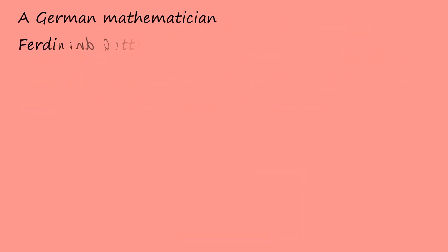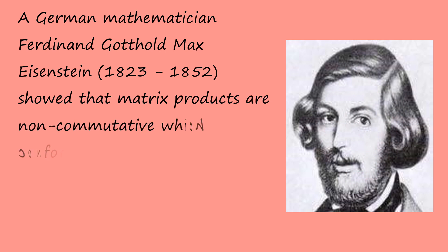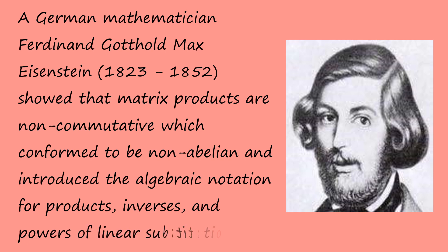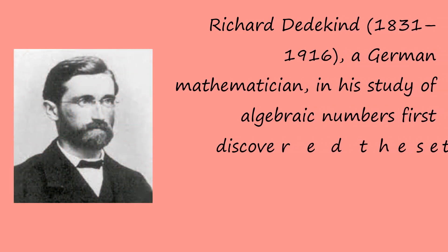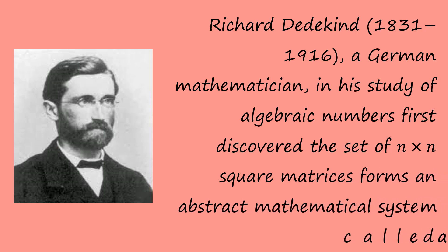A German mathematician, Ferdinand Gotthold Marx, showed that matrix products are non-commutative, which conforms to being non-abelian, and introduced the algebraic notation for product, inverse, and powers of linear substitutions. Richard Dedekind, a German mathematician, in his study of algebraic numbers, first discovered a set of n-by-n square matrices from an abstract mathematical system called a ring.